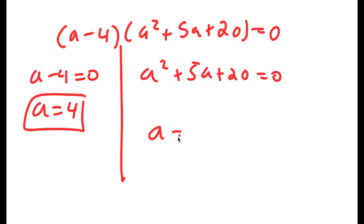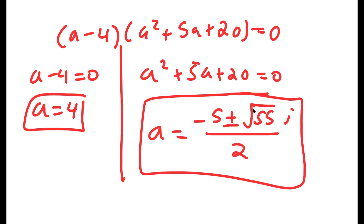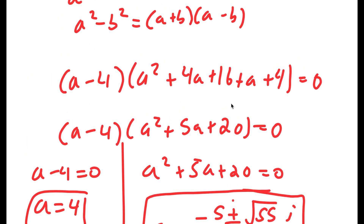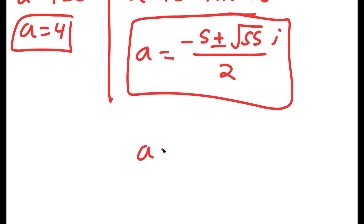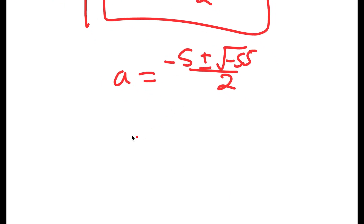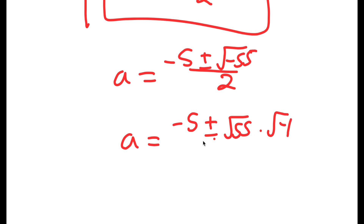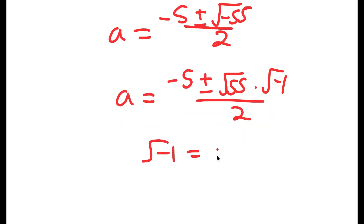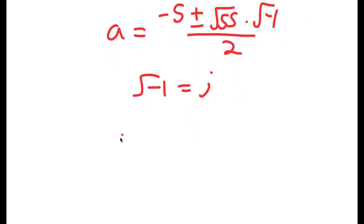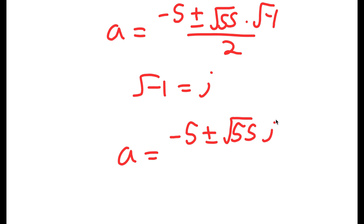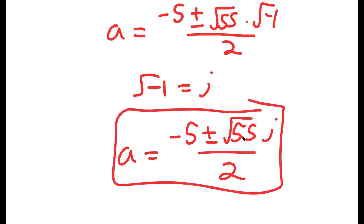If you do apply the quadratic formula, you get a equals negative 5 plus or minus the square root of negative 55, all over 2. I can rewrite the square root of negative 55 as the square root of 55 times the square root of negative 1. Since the square root of negative 1 equals the imaginary number i, I get a equals negative 5 plus or minus the square root of 55 times i, all over 2.